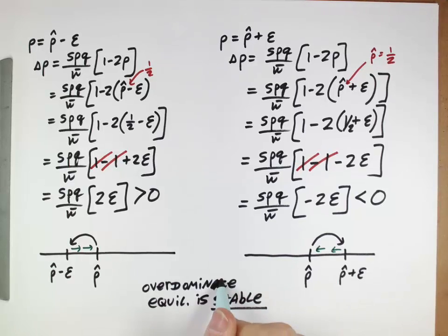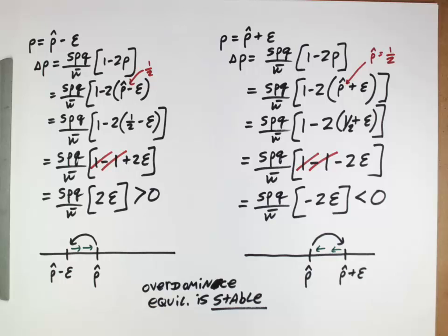So in this case, for the over-dominance case that we looked at and derived our results for, the equilibrium is stable — because we tested it in both directions and saw it returned. Not all equilibria are stable; sometimes they are unstable. It's only by doing a perturbation analysis like this that you're able to determine that. Perturbation analyses are used in a number of other circumstances as well.